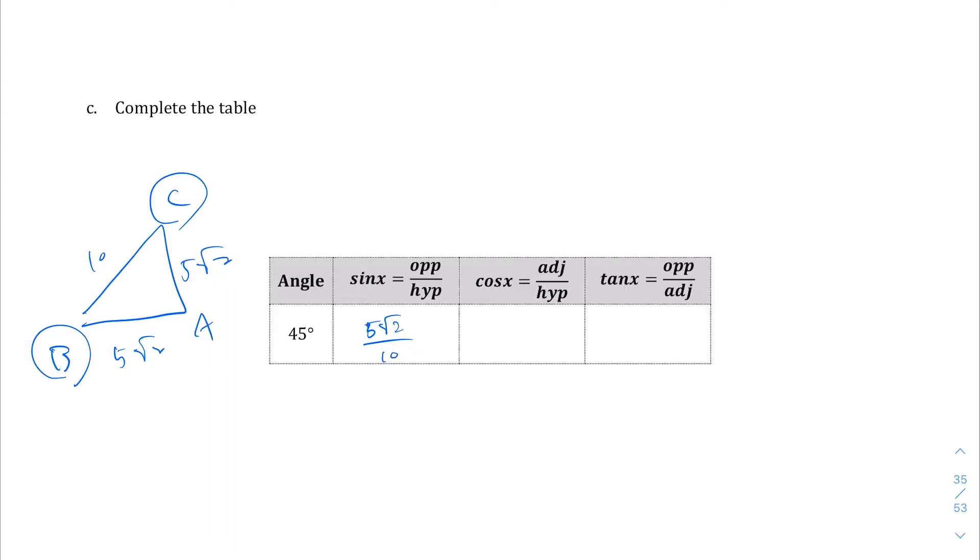The hypotenuse is always going to be 10 in this case. Let's simplify that - 5 goes into 10 twice so we end up with √2/2. For cosine of x it's going to be the same thing. The leg no matter what is just 5√2 over 10, which we already simplified to √2/2.